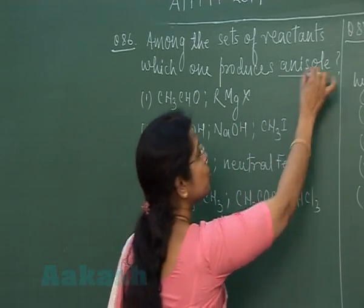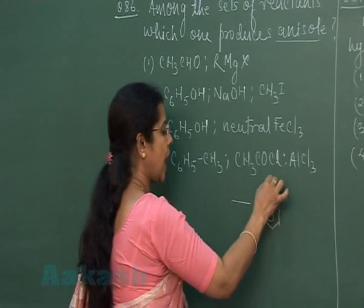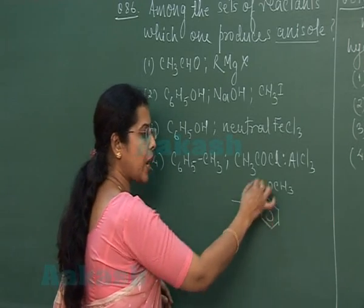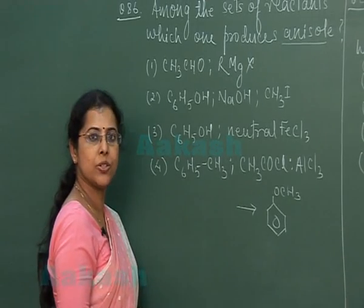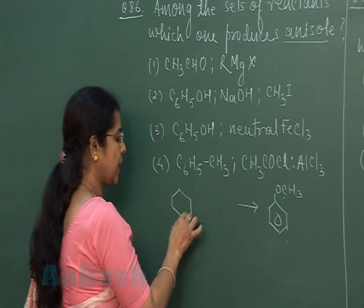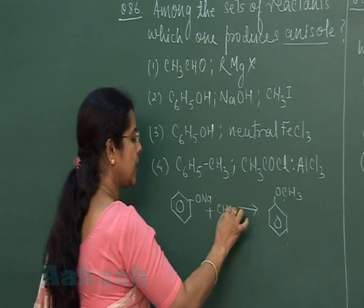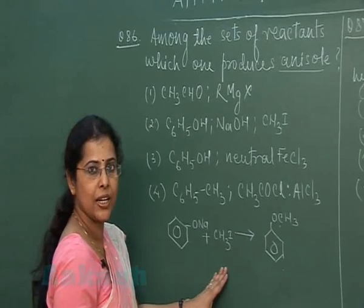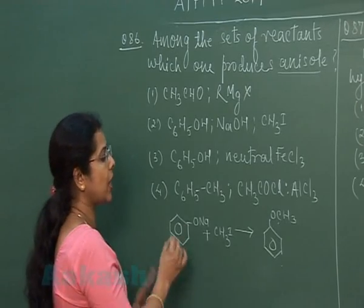Anisole is a benzene ring attached with an OCH₃ group, so the given product is an ether. Ethers can be prepared by Williamson synthesis. In order to prepare this ether, we must select sodium phenoxide plus methyl iodide — the smaller group should be from alkyl halide and the larger part from phenoxide.